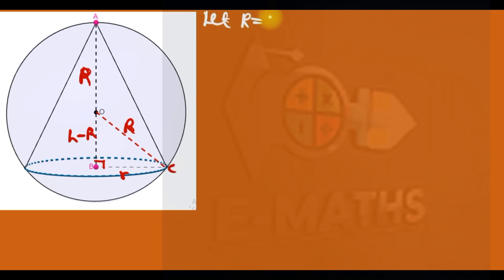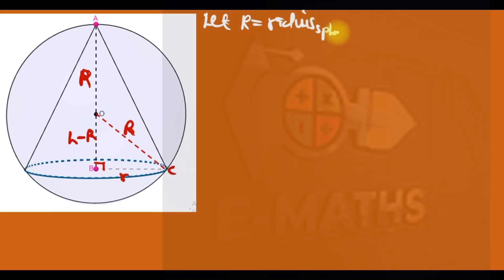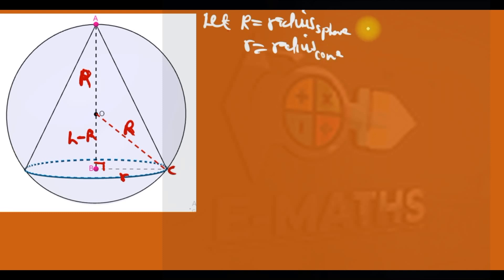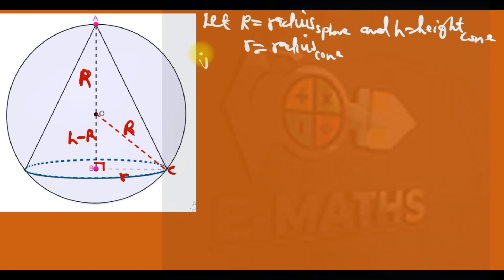Let R be the radius of the sphere, small r the radius of the cone, and H the height of the cone. In triangle OBC, by the Pythagorean theorem: